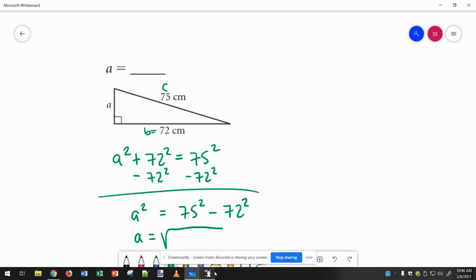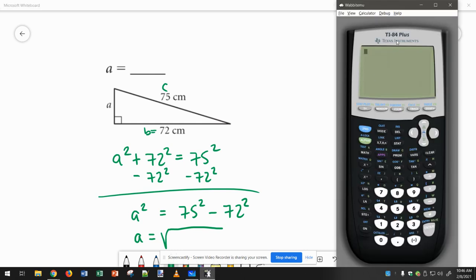So, then you can get your calculator, and if you've got a big beast TI-84 like me, you can do 75 squared minus 72 squared all in one line. Hit enter, and then take the square root, and you can say second, and then answer, and it will pop in the previous answer.